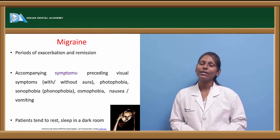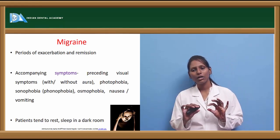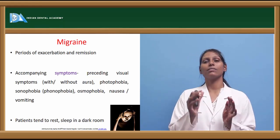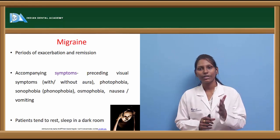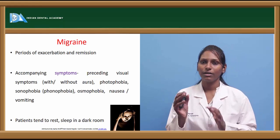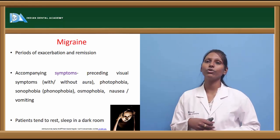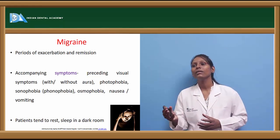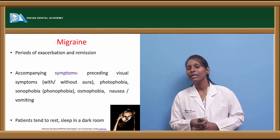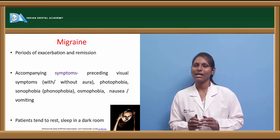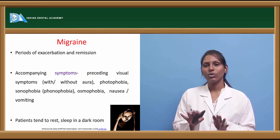Migraine is a kind of headache that manifests with periods of exacerbations and remissions — it is not a continuous headache. Migraine has accompanying symptoms such as visual aura, photophobia (avoiding light), phonophobia (fear of certain sounds), osmophobia (dislike of certain smells), and nausea and vomiting. Patients tend to rest and prefer to sleep in a dark, closed room during an attack.